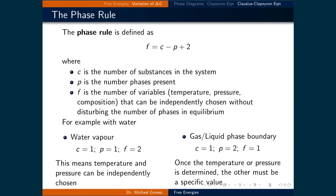The final topic in this lecture is the phase rule. It is defined as F equals C minus P plus 2, where C is the number of substances in the system, P is the number of phases present, and F is the number of variables — being temperature, pressure, or composition — that can be independently chosen without disturbing the number of phases in equilibrium.